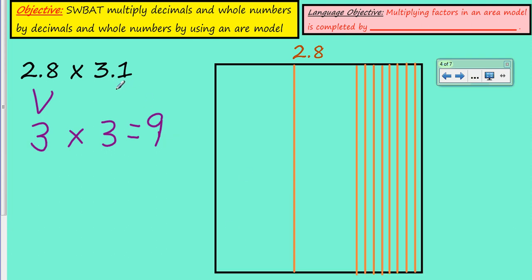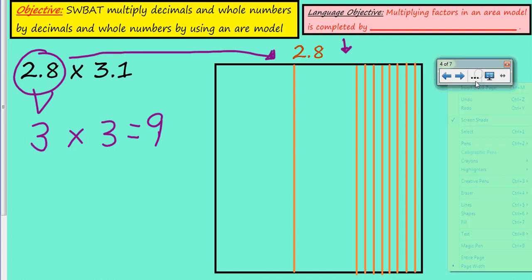Here's our problem: 2.8 times 3.1. What I like to do first is start with a little estimate. 2.8 is really just 3, right? And 3.1 is also very close to 3. So we just have 3 times 3, which means our estimate should be right around 9. Let's see if that's what occurs. I'm going to represent the 2.8 going up and down.